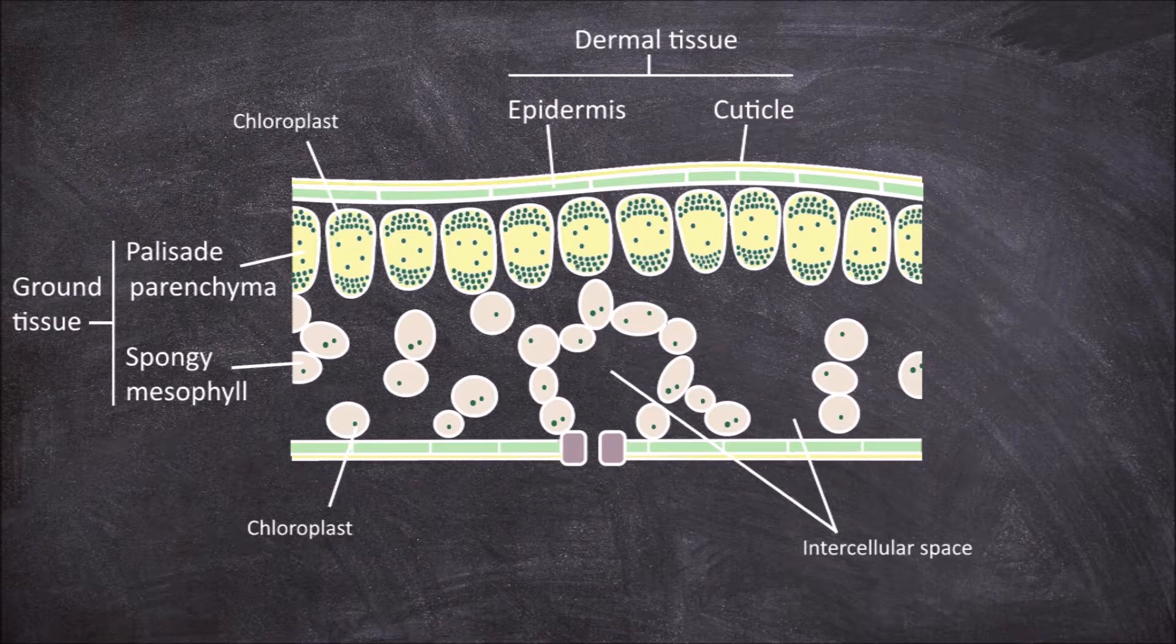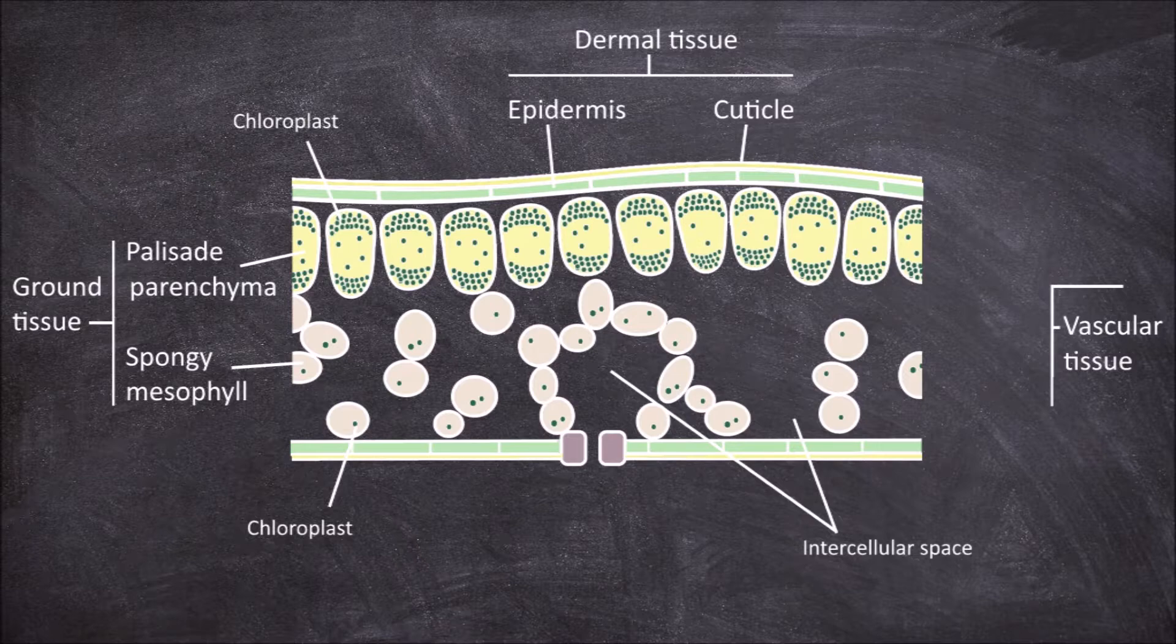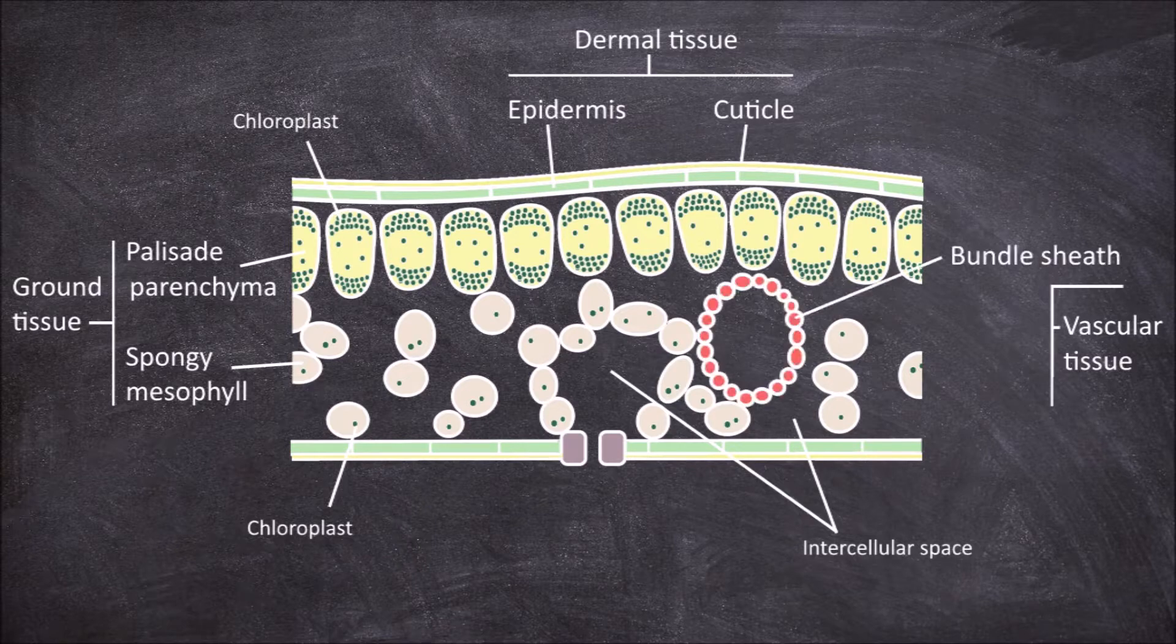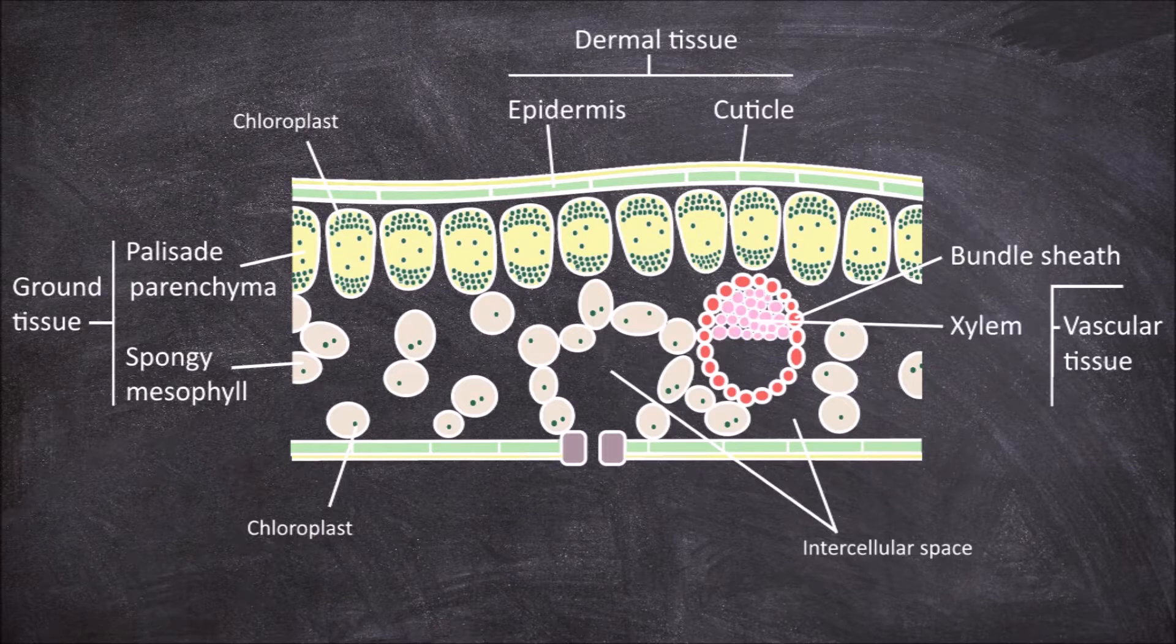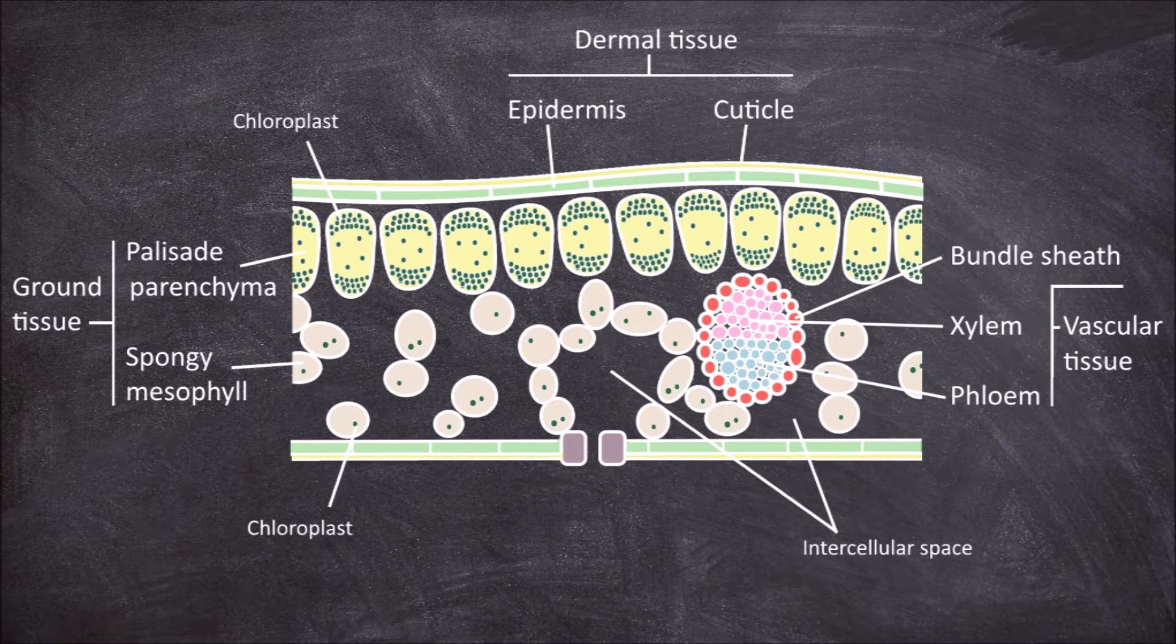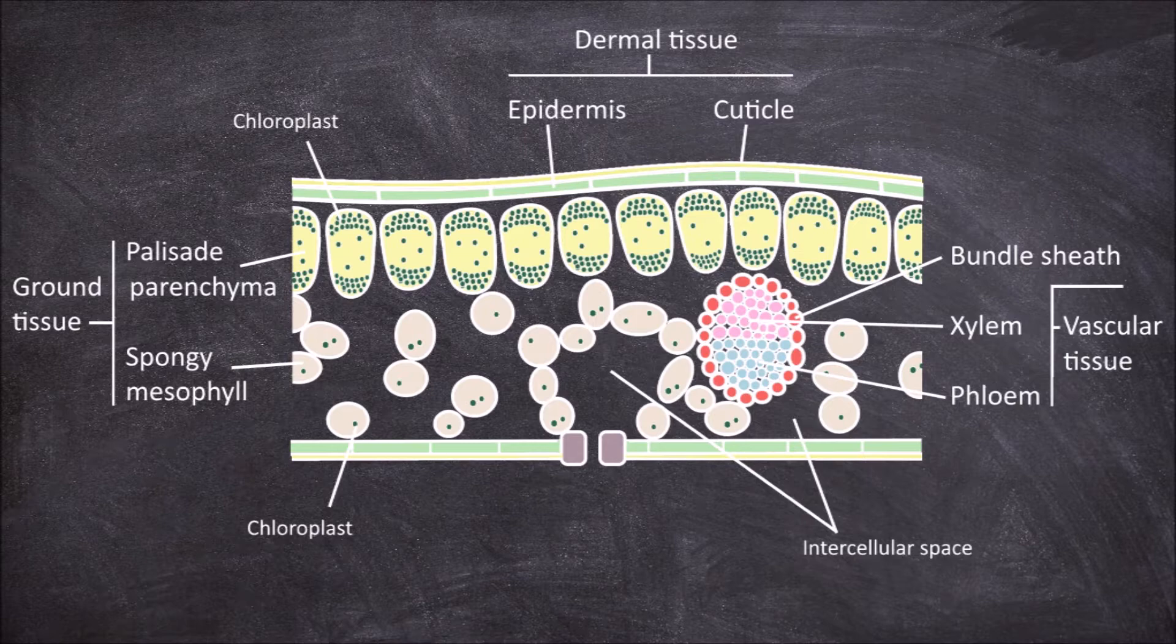Within the leaf you also have vascular tissue, which are the veins seen externally on the leaf. The vascular tissue consists of vascular bundles that are enclosed in a bundle sheath. Within the vascular bundles, the xylem is found anterior to the phloem. The xylem is involved in the transport of water from the roots to the leaves, whilst the phloem is involved in the movement of the food products made in the leaves down through the rest of the plant.